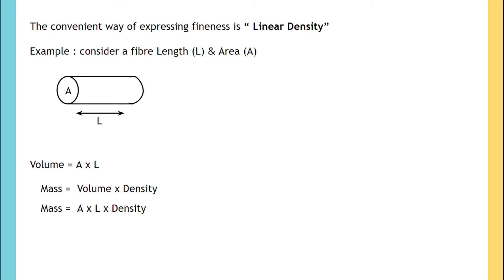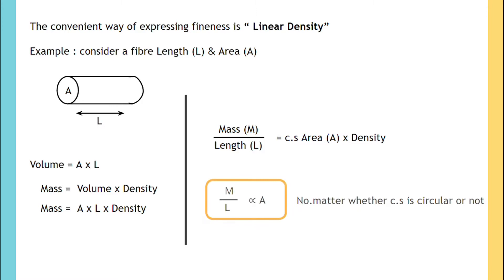Moving length to other side, the formula becomes mass upon unit length equals to cross-sectional area into density. The area becomes cross-sectional area because we are considering a fiber. Keeping density as constant, the formula becomes mass upon unit length proportional to cross-sectional area,